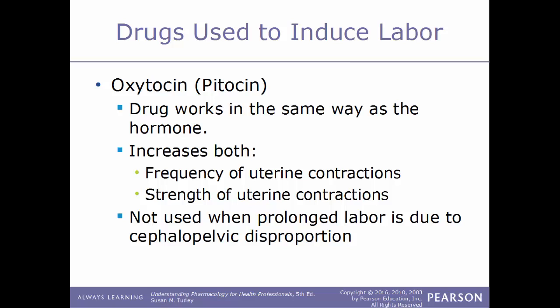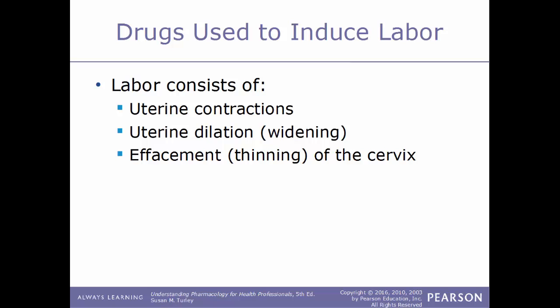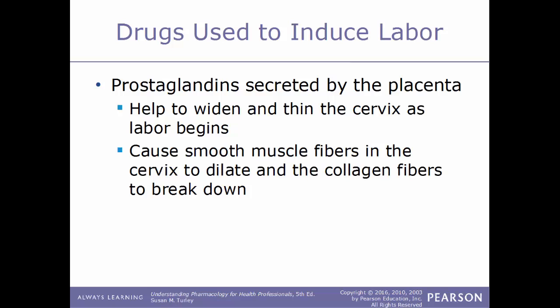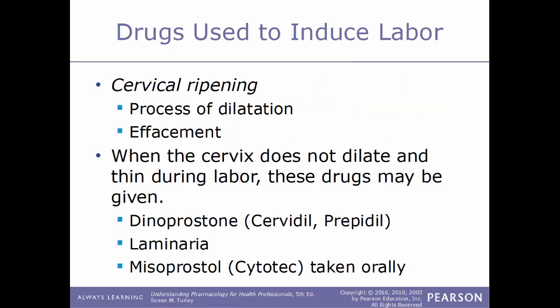Oxytocin is not used when prolonged labor is due to cephalopelvic disproportion, where the baby's head or body is too large to fit through the pelvis. Labor consists of uterine contractions, uterine dilation (widening), and effacement (thinning of the cervix). Prostaglandins secreted by the placenta help widen and thin the cervix as labor begins, causing smooth muscle fibers to dilate and collagen fibers to break down. Just before labor, cervical ripening occurs — the cervix softens so it can dilate and thin. When the cervix does not dilate or thin during labor, drugs such as dinoprostone (Cervidil, Prepidil), laminaria, and misoprostol (Cytotec, taken orally) may be given.